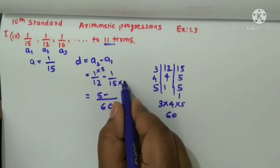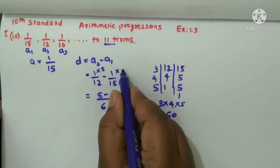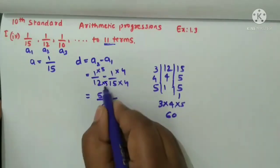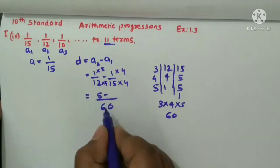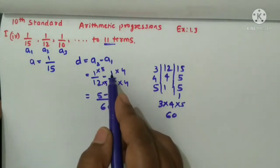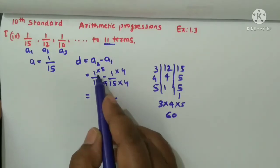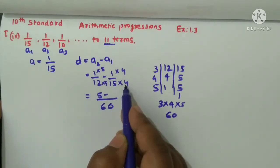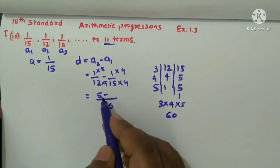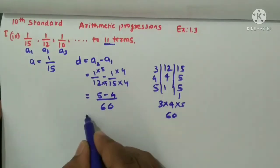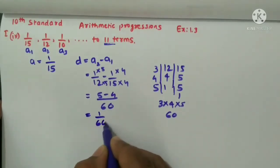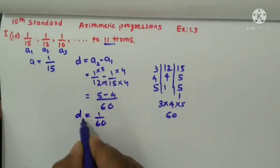Here for 15 you have to multiply to get 60, so here 4 you should multiply because 15, 4 is 60. So here that 5 you should multiply numerator also, here that 4 you should multiply the numerator also. Then 5 minus 4, so 5 minus 4 is 1 by 60. So d value is 1 by 60 here.